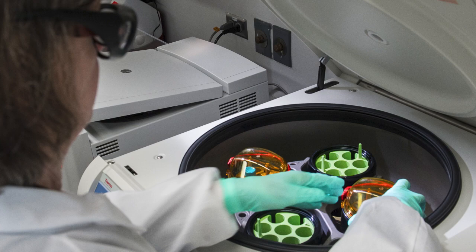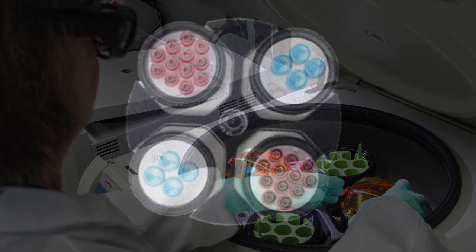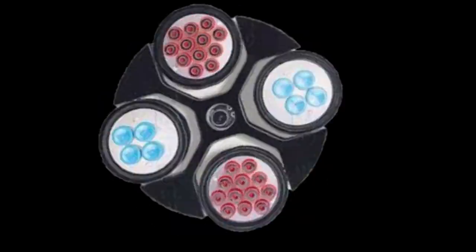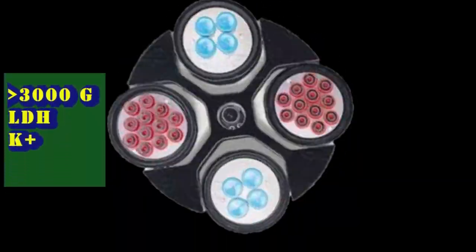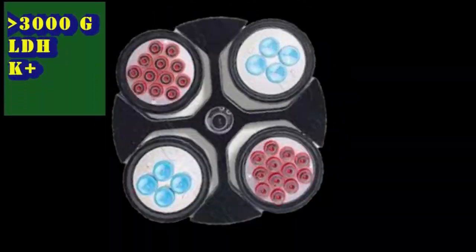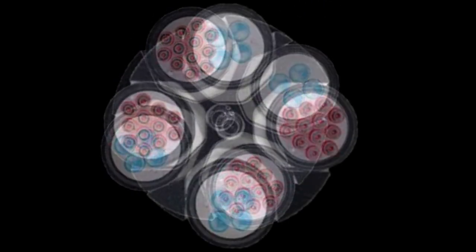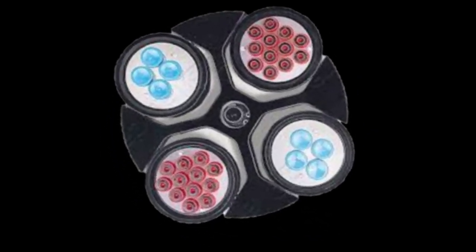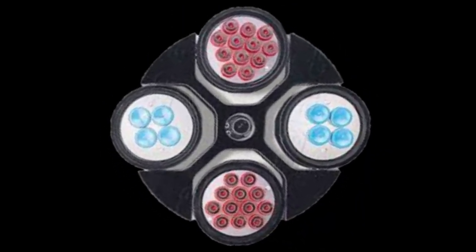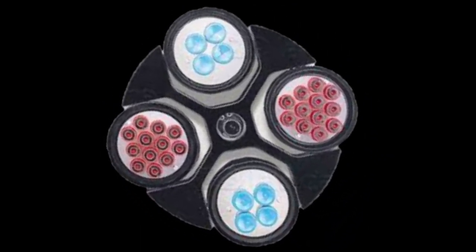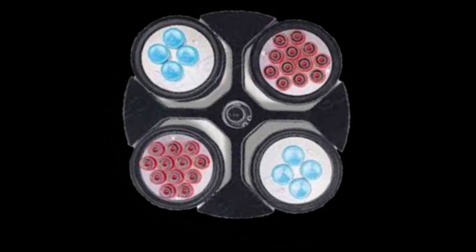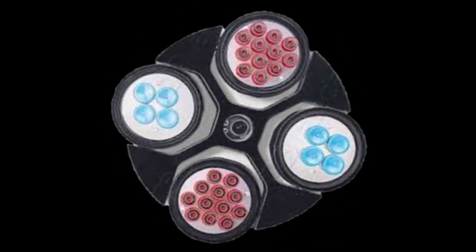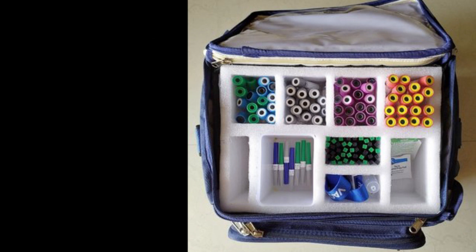Centrifugation conditions: excessive centrifugation force — more than 3000 g — may cause cell lysis and a slight increase in LDH and potassium. Inadequate force — less than 1000 g — or less than 10 minutes may cause incomplete barrier formation in gel tubes or cell contamination of the specimen.